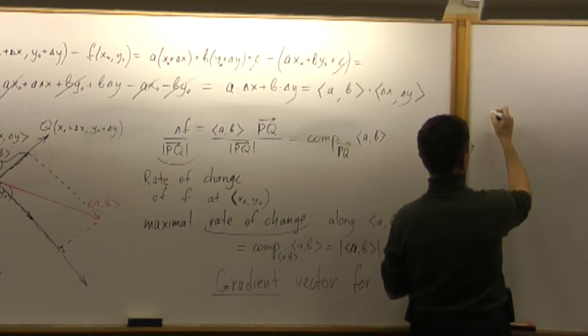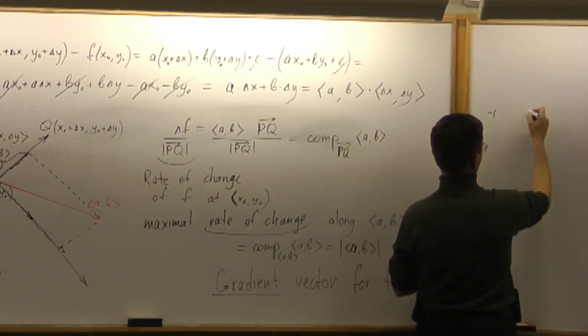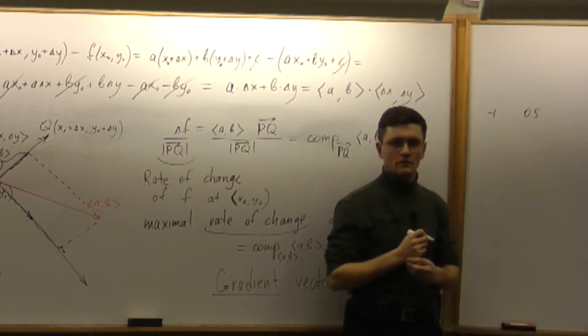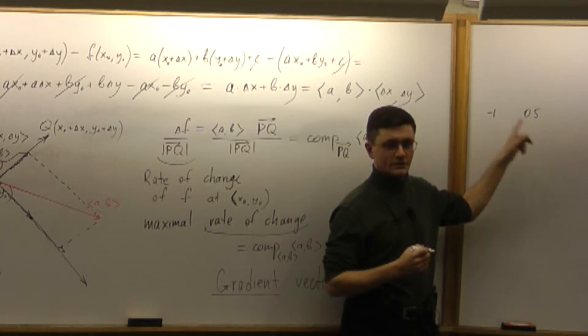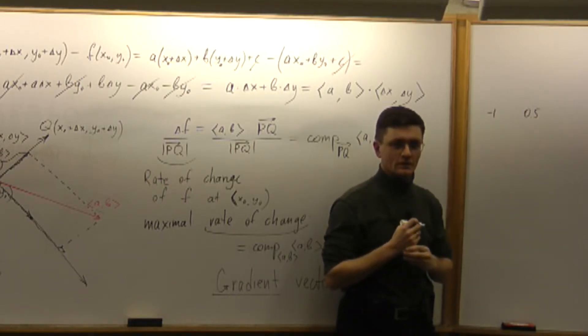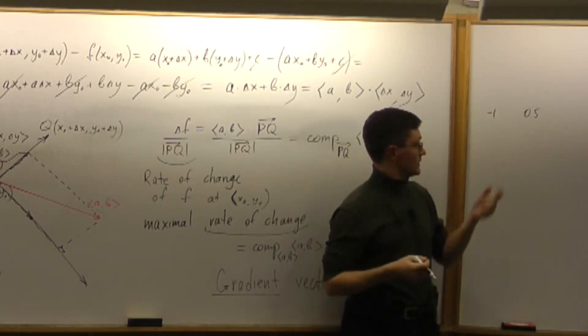If I ask you what is greater, minus one or 0.5, which number is greater? 0.5, right. So any positive number is greater than negative number. So which is the minimal number among these two?